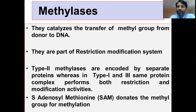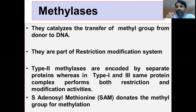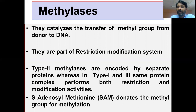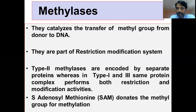In the restriction modification system, type 2 methylases are encoded by separate proteins. There are three types of restriction modification: type 1, type 2, and type 3. In type 2 restriction modification, restriction is mediated by a separate polypeptide and methylation is also mediated by a separate enzyme. When it comes to type 1 and type 3, the same protein complex, which has different subunits, mediates both restriction and modification.